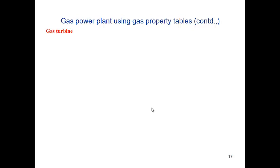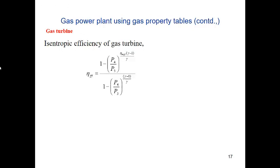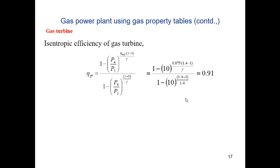The third component in the gas power plant is the gas turbine. It is solved similarly to the air compressor, in three steps. In the first step, isentropic expansion is solved. In the second step, actual expansion of the gas is solved. The isentropic efficiency of the gas turbine is determined from the pressure ratio, polytropic stage efficiency, and adiabatic index.